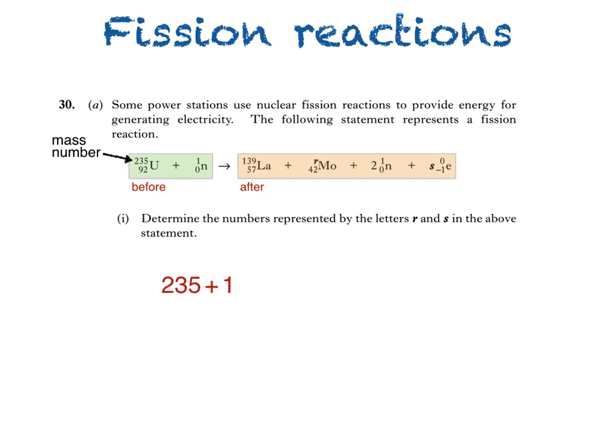After the reaction, the total of the mass numbers is 139 for lanthanum, plus R, what we're trying to find, the mass number of molybdenum, plus 2, since we have two neutrons. The electrons have a mass number of 0.